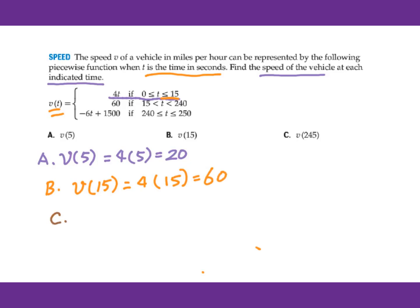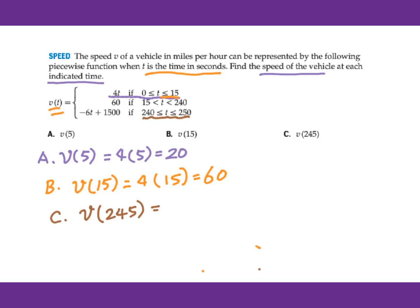For part c, we're looking for v(245). For 245, it's in this domain, so we have to use negative 6 times 245 plus 1500, which equals 30. That's the speed when t equals 245 seconds.